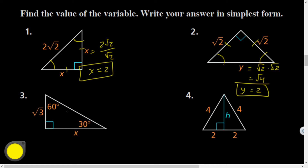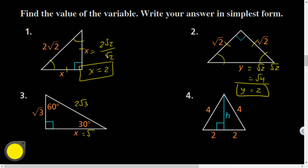Problem 3: It's a 30-60-90. The shortest leg — opposite the smallest angle — is √3. To go from the short leg to the hypotenuse, multiply by 2: that's 2√3. To go from the short leg to the long leg, multiply by √3: that's √3 × √3 = √9 = 3.